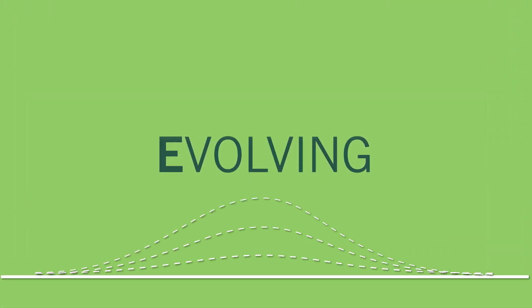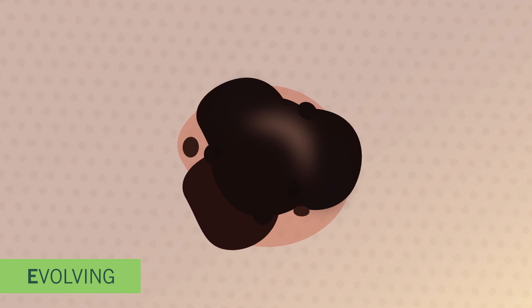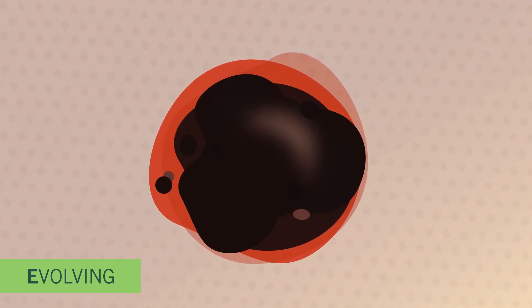E. Evolving. Normal skin spots maintain a steady appearance over time. However, if you develop a new mole, or have a mole that starts to grow or change shape and texture, this could be melanoma.